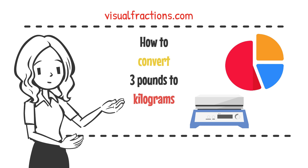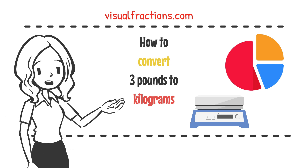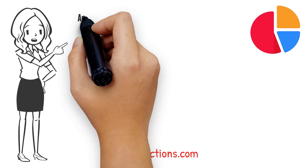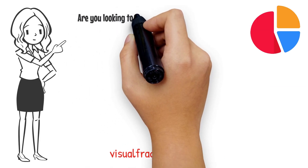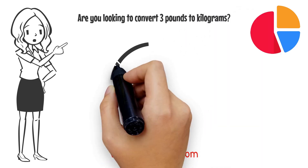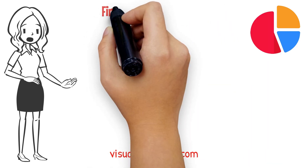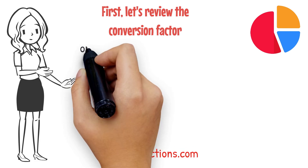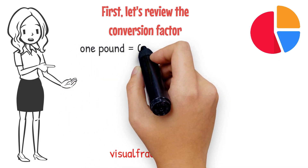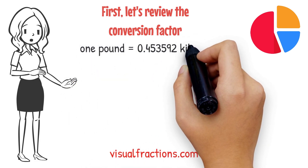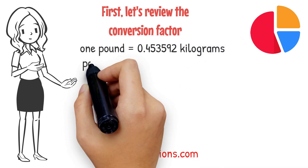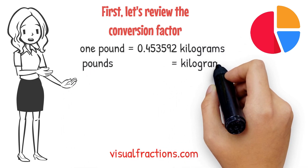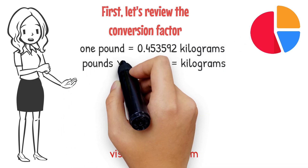Welcome to the Visual Fractions YouTube channel. In this tutorial, we'll guide you through the process of converting three pounds to kilograms. First, let's review the conversion factor: one pound is equal to approximately 0.453592 kilograms. To convert pounds to kilograms, simply multiply the number of pounds by this conversion factor.